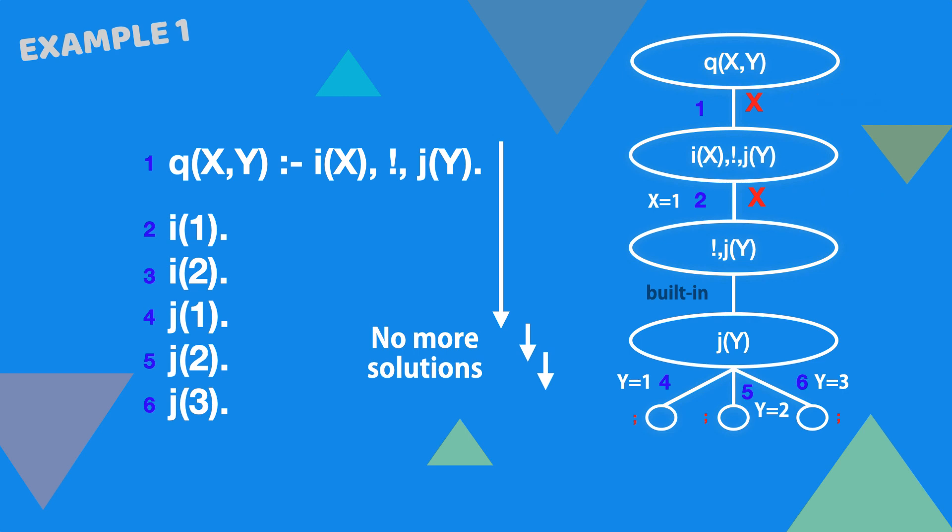So this time there are no solutions with x equals 2. The cut has changed the program behavior thanks to its side effects.